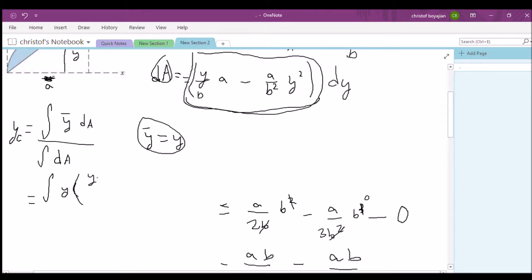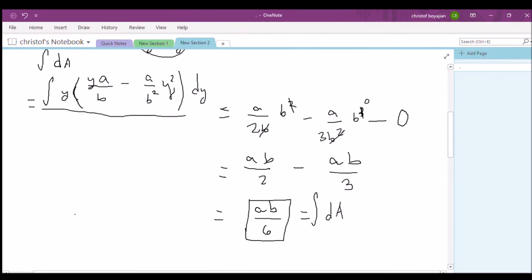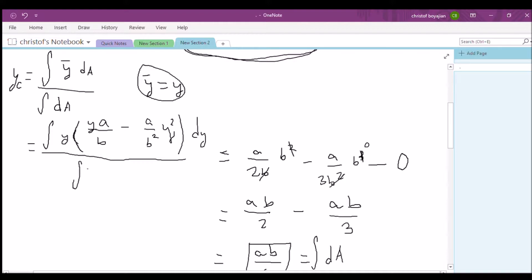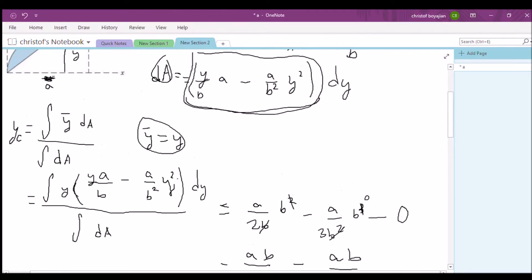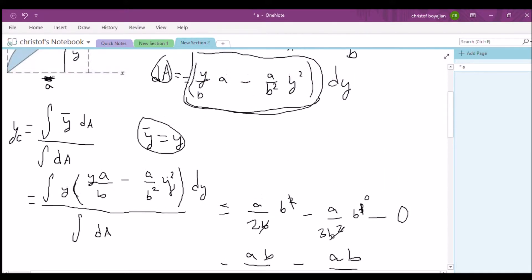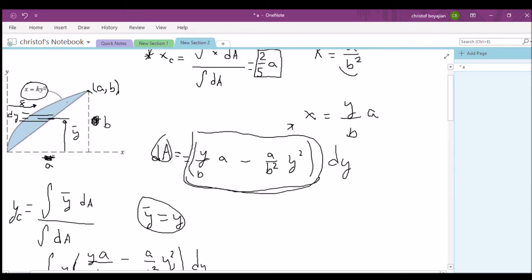So it's going to be y a over b minus a over b squared times y squared times dy over our integral of dA. Now we have solved for our dA over here in the previous video. I'm just going to leave it for the sake of cleanliness. I'm just going to leave it as the integral of dA and we'll plug that in later.